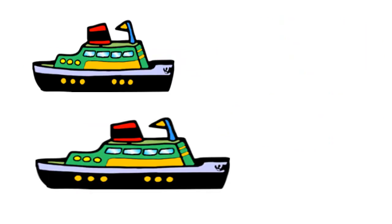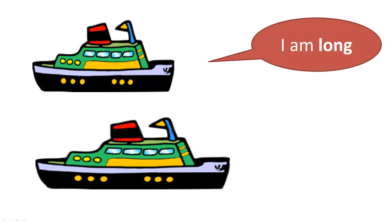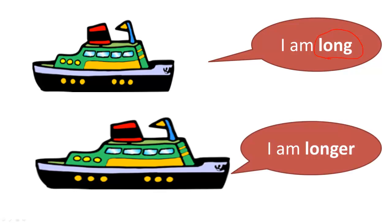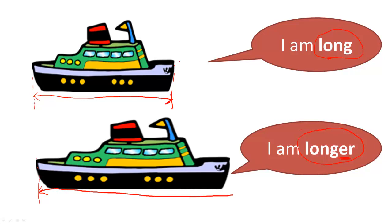Let's look at the next slide — we have a picture of two ships. The first ship at the top says, 'I am long.' L-O-N-G. What would the second ship say? It says, 'I am longer.' I can imagine a little arrow that stretches all the way along the first ship — so that ship is long. But the second one stretches further to the right, so it is longer.